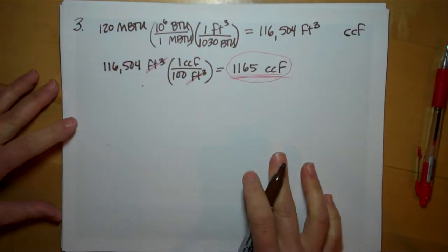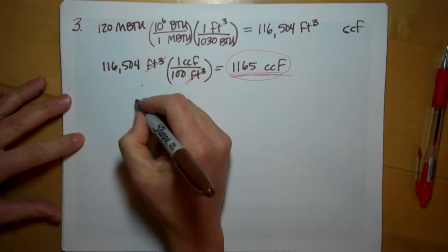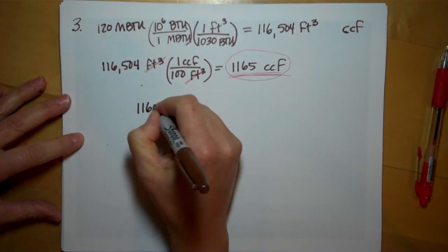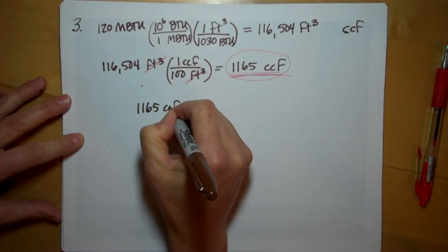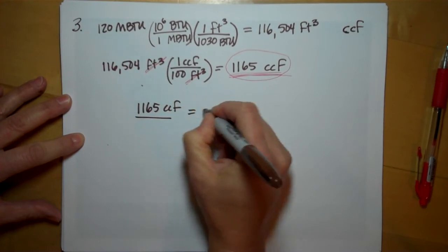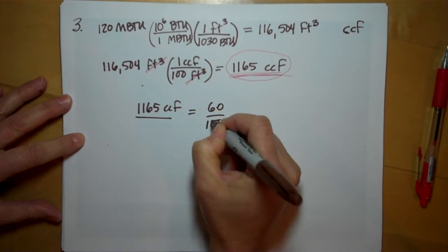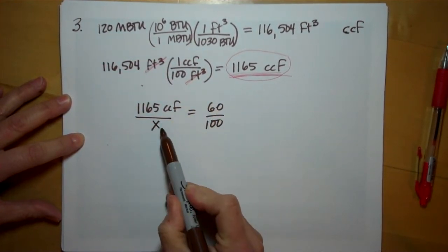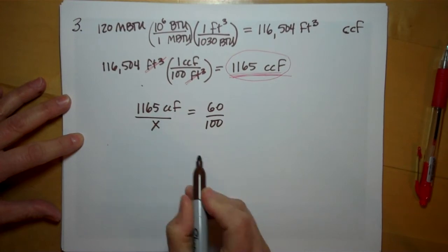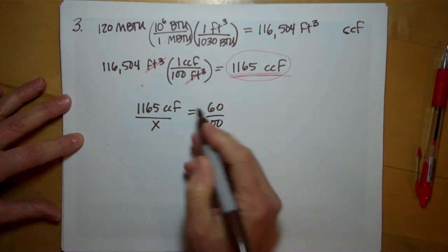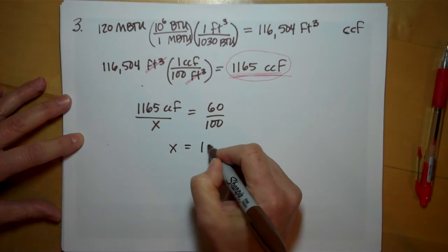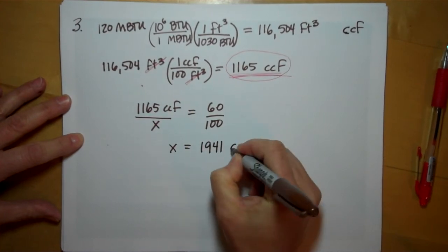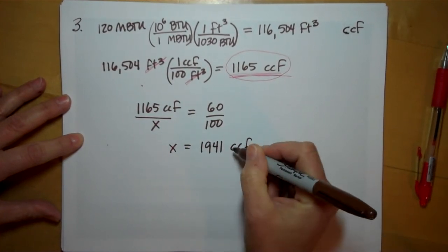So if we do a simple proportion with percents, if 1165 CCF is supposed to be the 60% efficient, what's going to be X? So just cross multiplying, X comes out to 1,941 CCF.